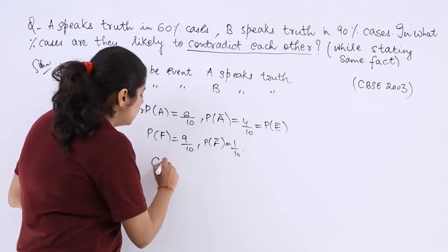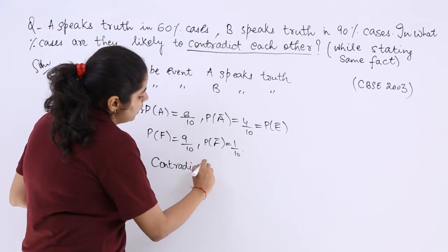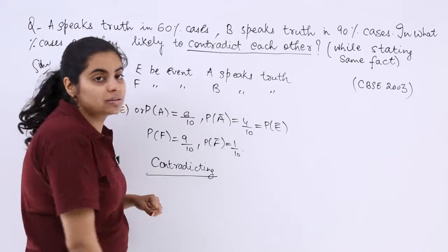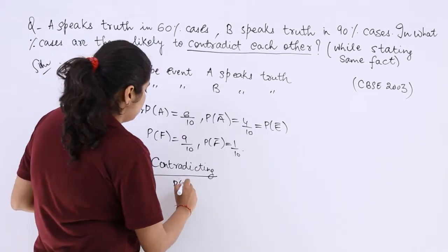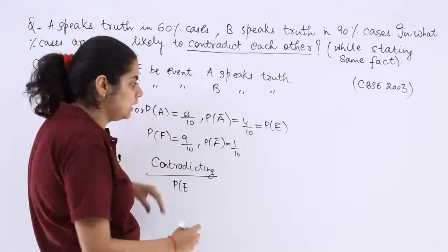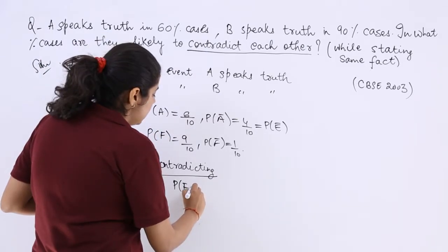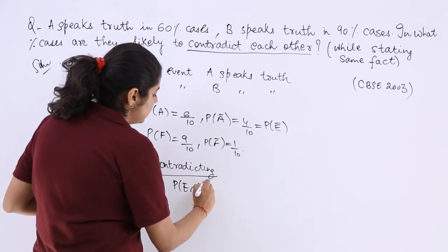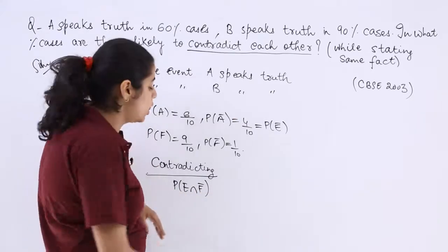Now for contradicting each other. Contradicting each other means A speaks the truth, that means E event, while at the same time F is not going to happen. Means A speaks the truth but B does not.